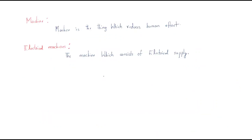In this session we will discuss the introduction to electrical machines. First, let's define what a machine is. A machine is something which reduces human effort — work that requires 10 human beings can be done by just one machine, saving time and effort. In our daily life we use a number of machines, and each of them is an example of a machine.